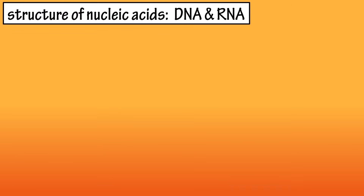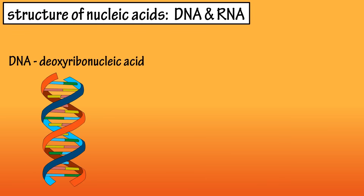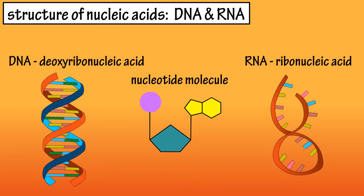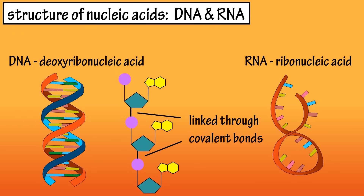The structure of nucleic acids, DNA and RNA. There are two main types of nucleic acids: DNA, or deoxyribonucleic acid, and RNA, or ribonucleic acid. Nucleic acids are large molecules made up of smaller molecules called nucleotides. The nucleotides in these molecules are linked together through covalent bonds, or bonds where electrons are shared between atoms.